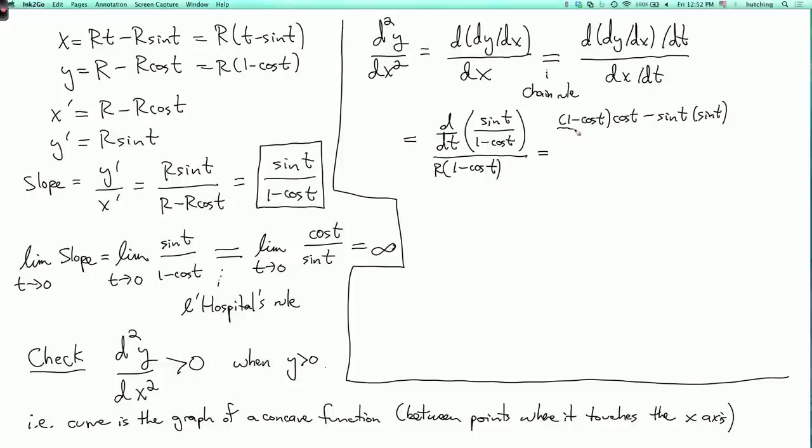Okay, and now, going back to the top here, I then have to divide by 1 minus cos t squared, and I divide this whole thing by r times 1 minus cos t. So, what do I get?